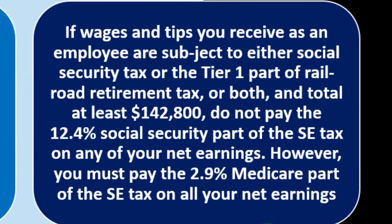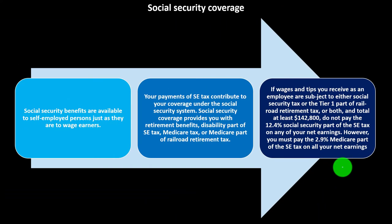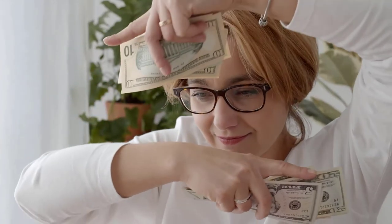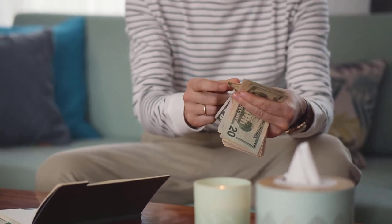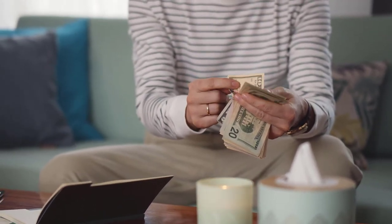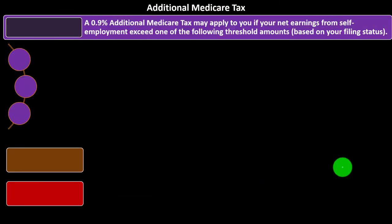You must pay the 2.9% Medicare part of the SE tax on all of your net earnings. The Medicare part of the self-employment tax does not have a cap on it, so no matter how high your income goes, you pay into it. It's a much smaller tax, and it functions more clearly as a safety net program rather than a retirement benefit program.